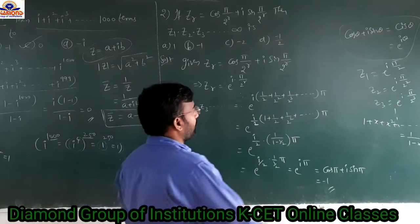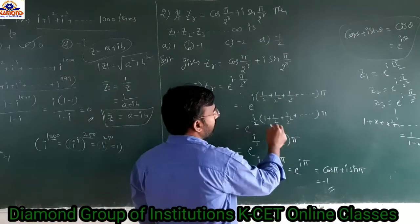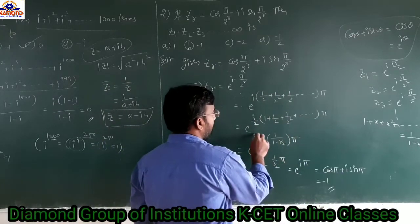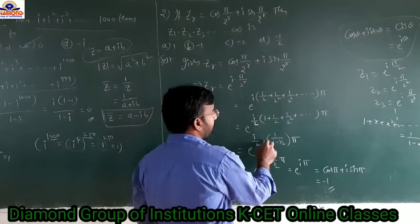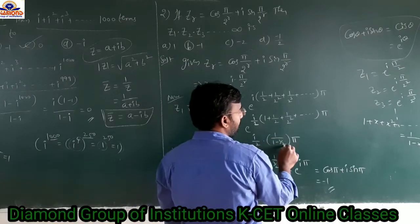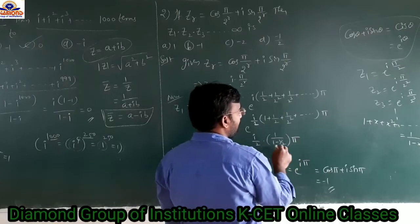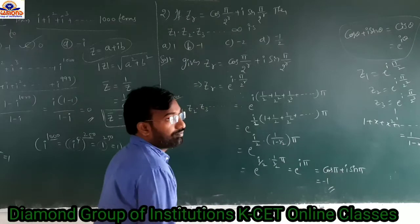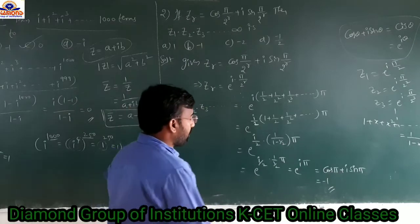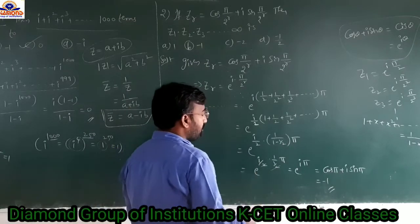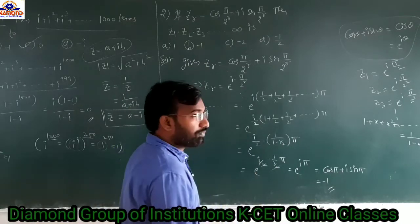So we get e^(iπ/2) times 1/(1 minus 1/2) times π. Since 1 minus 1/2 equals 1/2, we get 1/(1/2) equals 2. The 2 cancels, and we get e^(iπ).